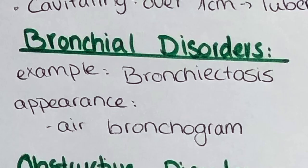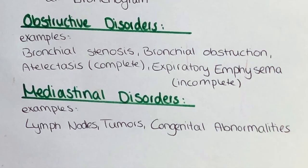Bronchial disorders are for example bronchiectasis, which will appear characteristically by their air bronchogram. Obstructive disorders include bronchial stenosis, bronchial obstruction, atelectasis in the case of a complete obstruction, or expiratory emphysema in the case of an incomplete obstruction. Different mediastinal disorders include lymph node disorders, tumors affecting the mediastinum, congenital abnormalities, and aneurysms — everything that affects the most medial part of the thorax.